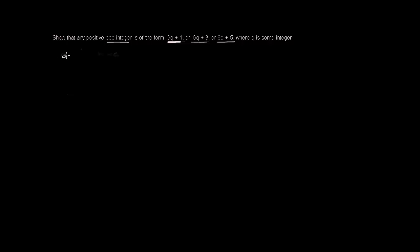Let us consider a belongs to integers and b equals to 6. By applying Euclidean Division Lemma, we will get a equals to 6k plus r, where r is less than or equal to 0 less than 6.